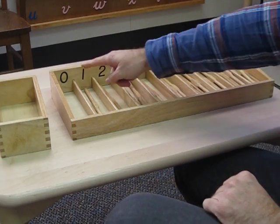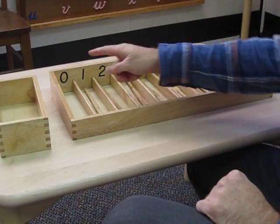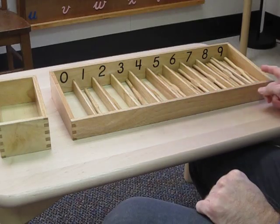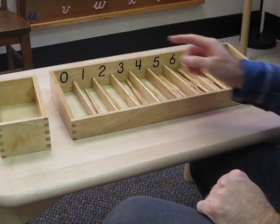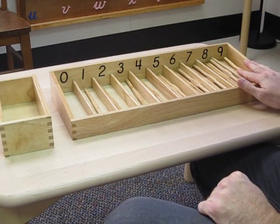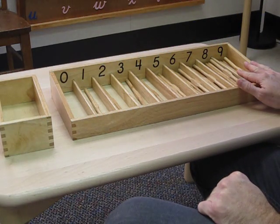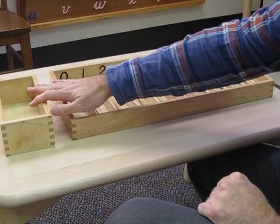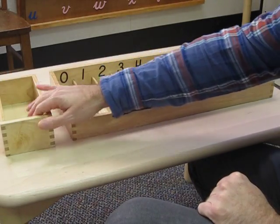And at this time I'll introduce the concept of zero. And zero will be the control of error for this because if you get to nine and there's still some spindles in here, you can say we must have put too many in one of these numbers. So we can introduce the concept of zero being the empty set.